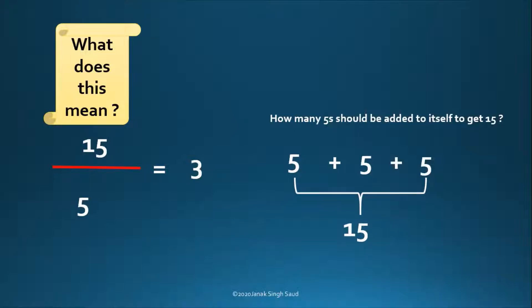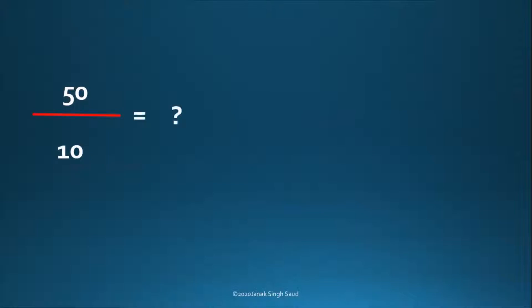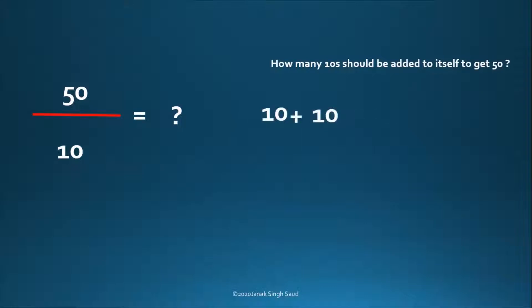Let's take another example: 50 by 10. How many 10s are required to make a 50? 10 plus 10 plus 10 plus 10 plus 10 — 5 times are required to get 50. So the answer is 5.